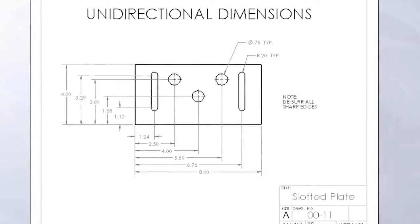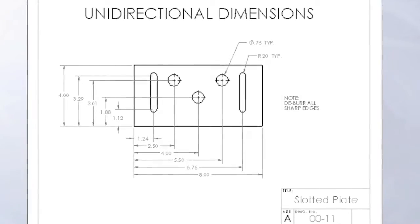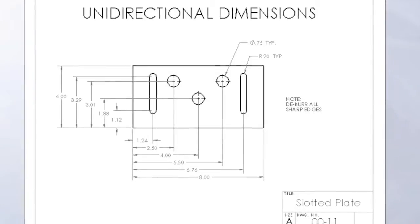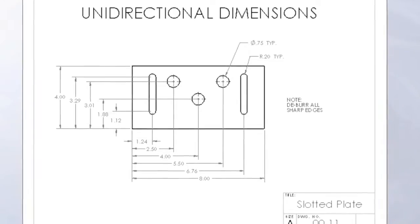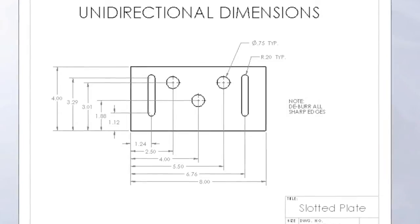Unidirectional dimensions show all dimension values horizontally to the bottom of the blueprint. The reason unidirectional dimensions are used is to make it easier for the print reader to view all of the values from the bottom edge of the print.